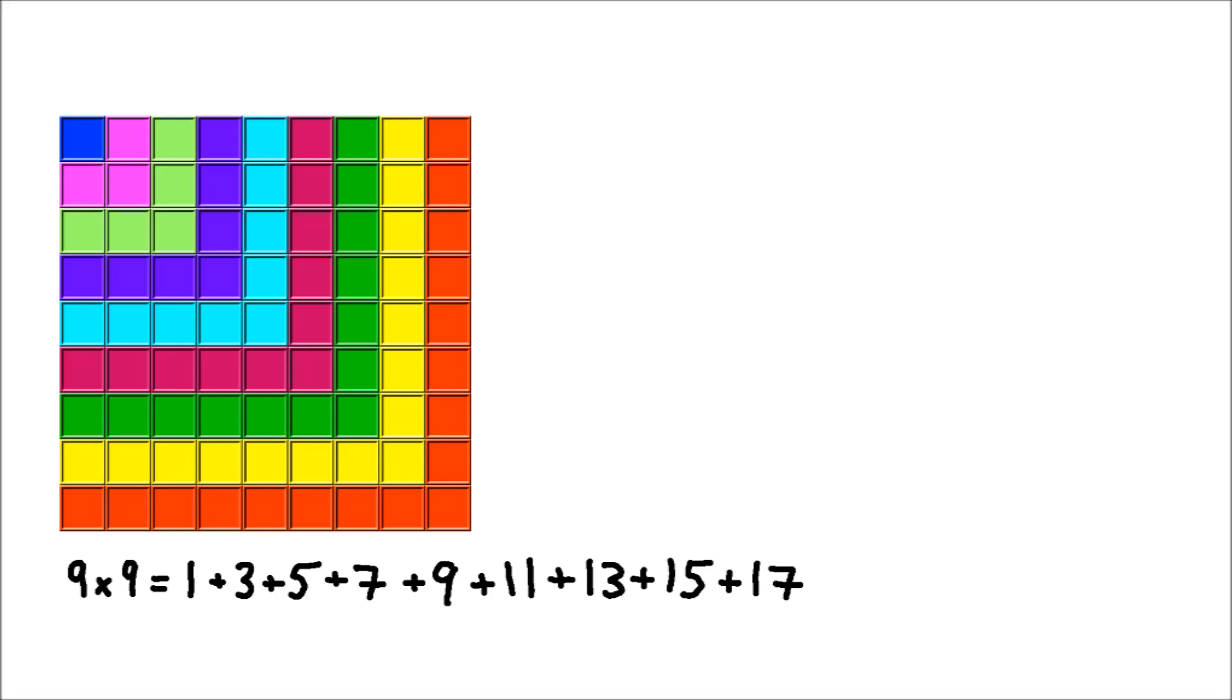So the square numbers are 1, 4, 9, 16, and so on. And each of those can be written as a sum of odd numbers.